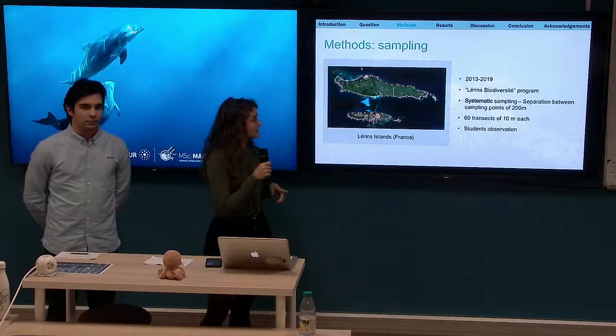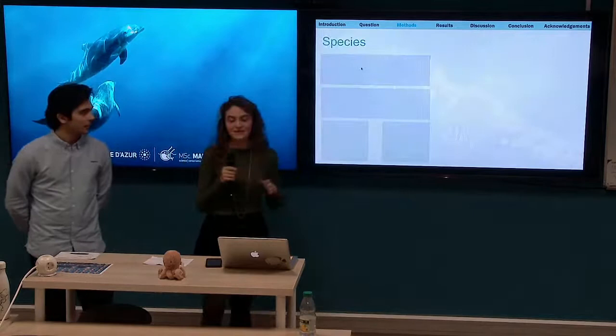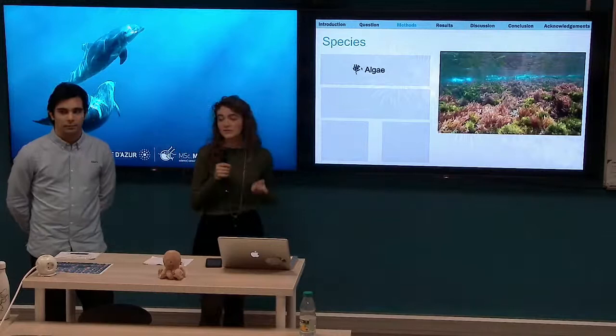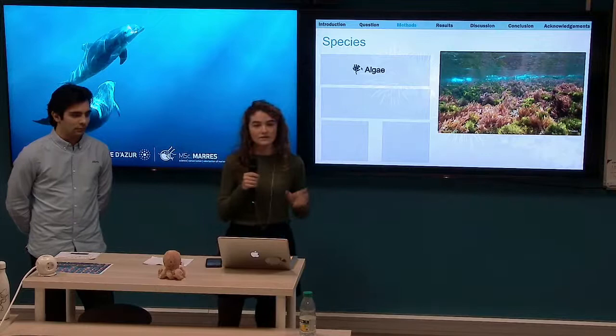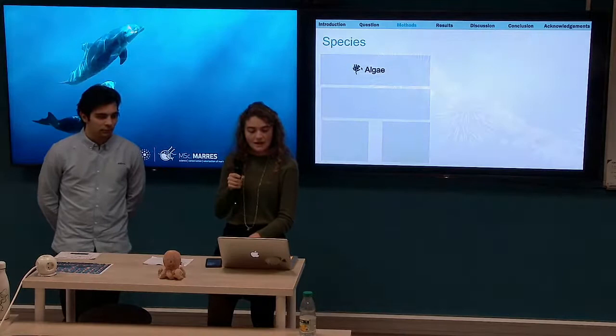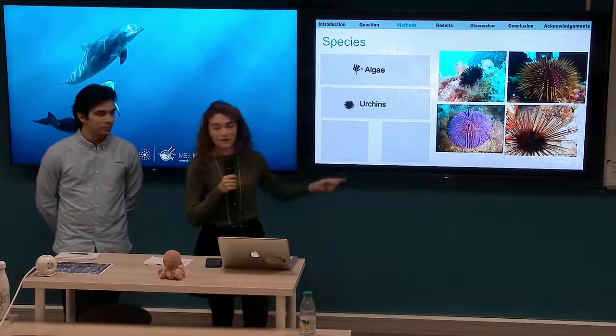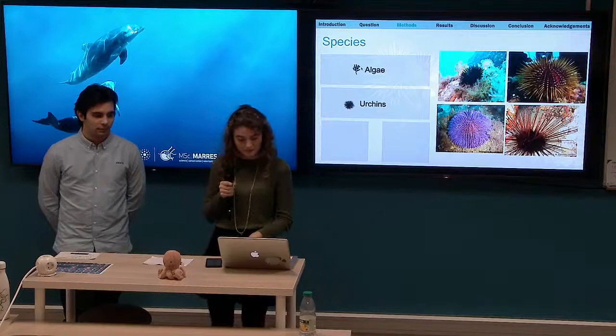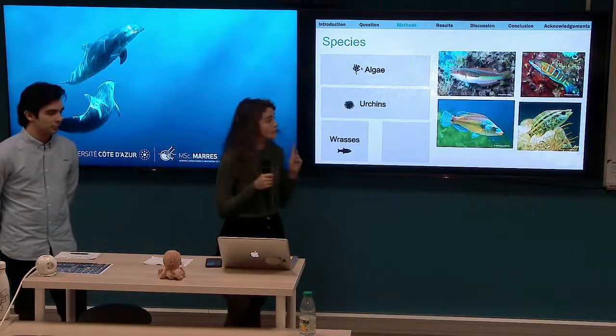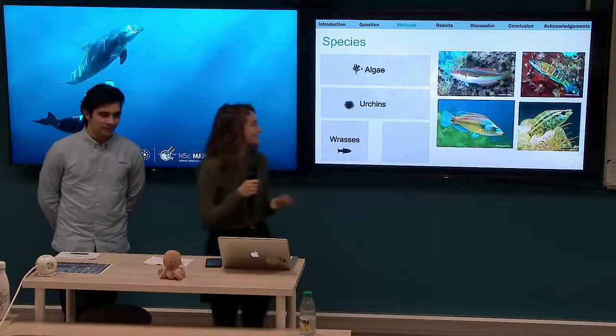From all the data gathered, we worked with 16 species of algae and took coverage divided into four categories, from not present to very abundant. For urchins, we considered four species: the black urchin, the brown, the purple, and the longspine, counting the number of individuals per sampling point. Regarding predators, we took four species of wrasses: the rainbow wrasse, the ornate wrasse, the peacock wrasse, and the five-spotted wrasse.